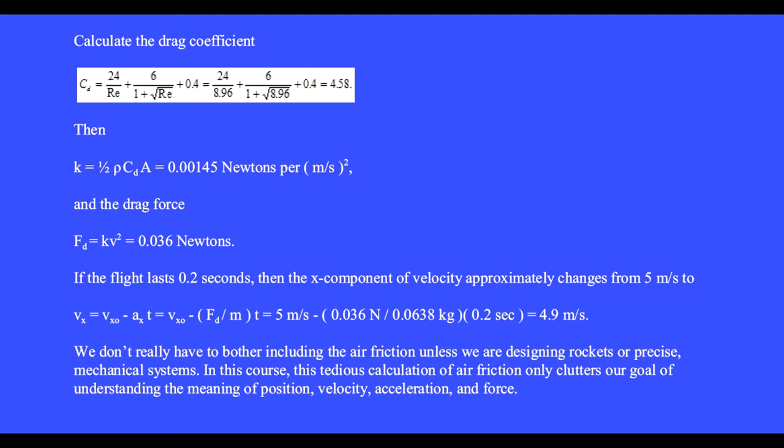then the x component of velocity approximately changes from 5 meters per second to v sub x equals vx0 minus axt. We find a sub x as the drag force over the mass. And we get v sub x equals 4.9 meters per second. We didn't really have to bother including the air friction unless we were designing rockets or precise mechanical systems.